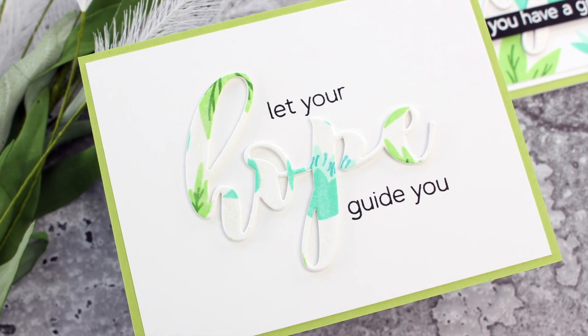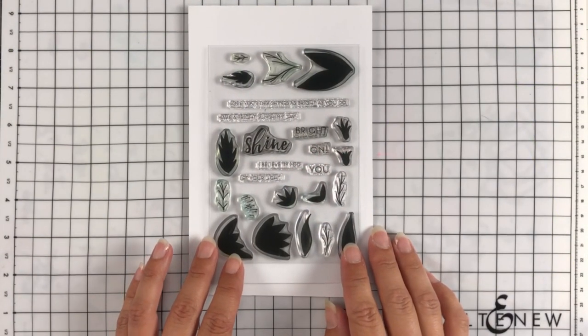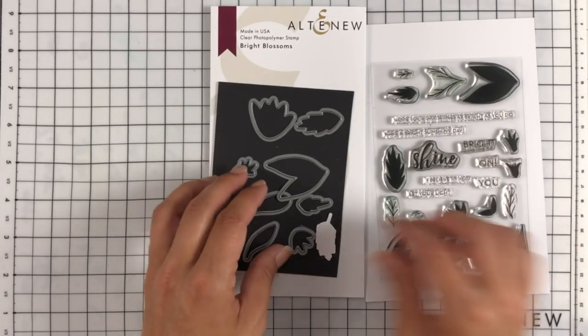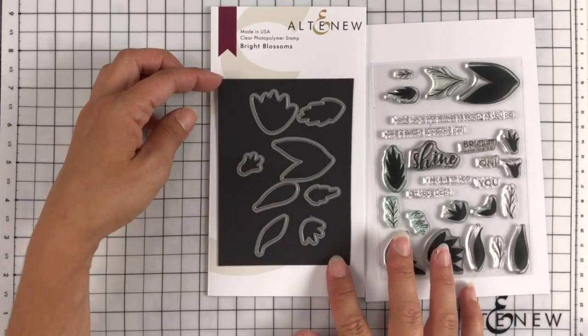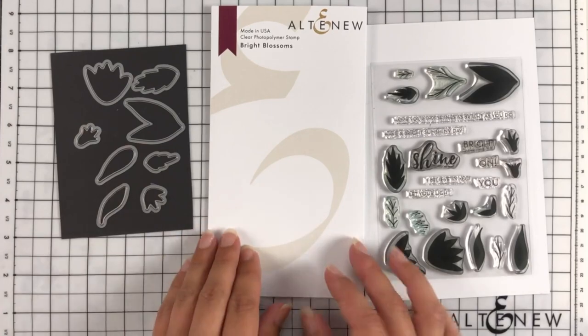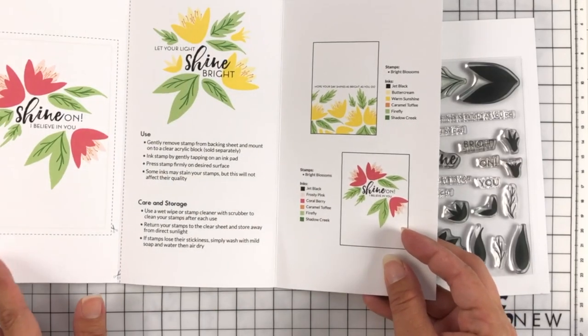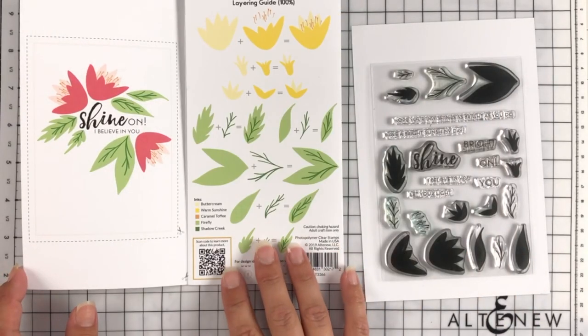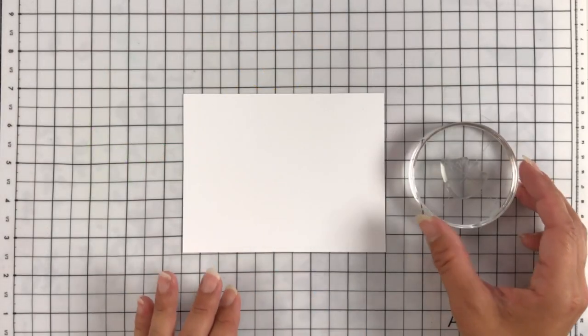This first stamp set is called Bright Blossoms. It's a four by six stamp set. It also has a coordinating die that you can purchase as well. In the Altenew stamps there is a booklet for you that you can reference. I like to show these in the videos because I think they are a great tool to have. This just shows you some examples to get you started and also how these stamps can layer together.